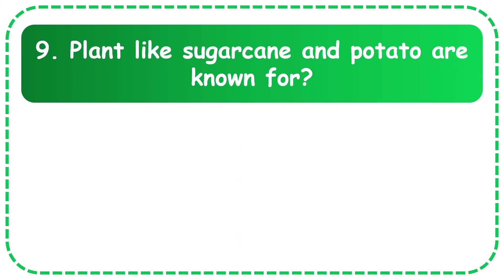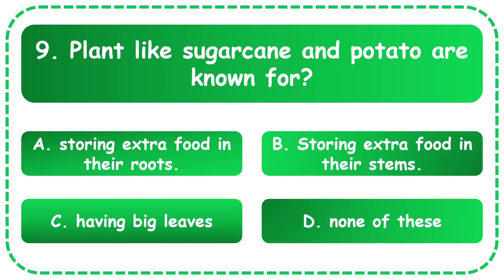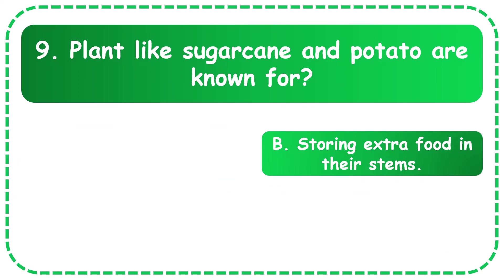Plants like sugarcane and potato are known for — the options are storing extra food in their roots, storing extra food in their stems, having weak leaves, or none of these. The answer is storing extra food in their stems.